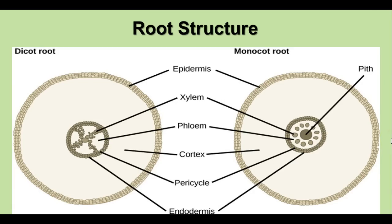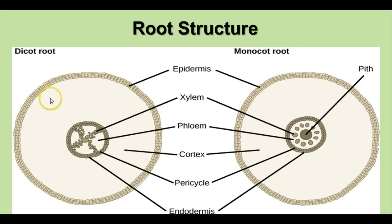If you dissect roots and cut them crossways in a cross section, you'll see various structures. We have an epidermal layer on the outside, and also an endodermal layer — that's dermal tissue that protects the vascular cylinder from the rest of the root. We have ground tissue, or the cortex, which is made of parenchyma cells, and sometimes colenchyma and sclerenchyma. And then we have the vascular cylinder, which contains the xylem and phloem.